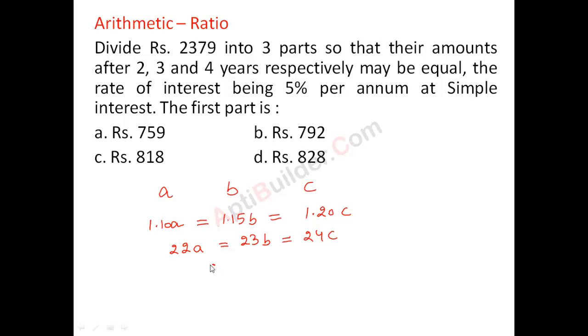So in this case if you want to calculate the ratio A is to B is to C. LCM of 22, 23 and 24 divided by 22. LCM of 22, 23 and 24 will be 22 into 23 into 23 into 2 is already here. So 24 this will be 12. So this is the LCM of 22, 23 and 24.